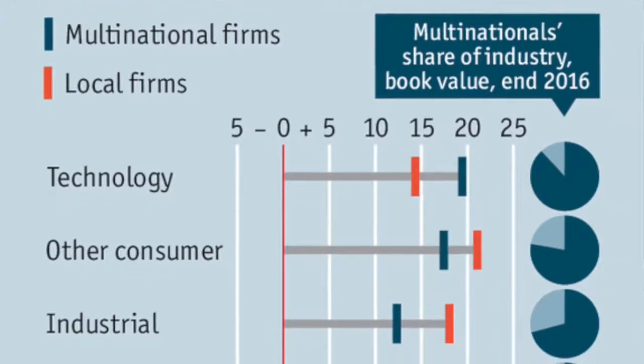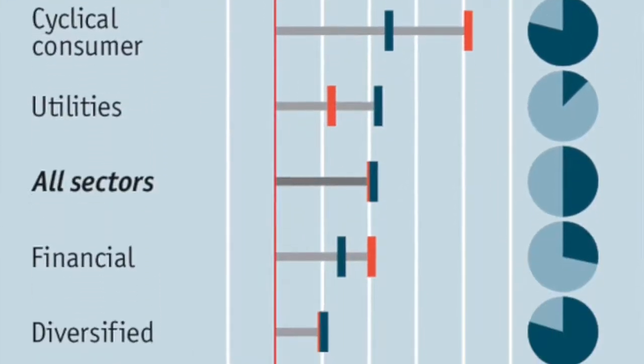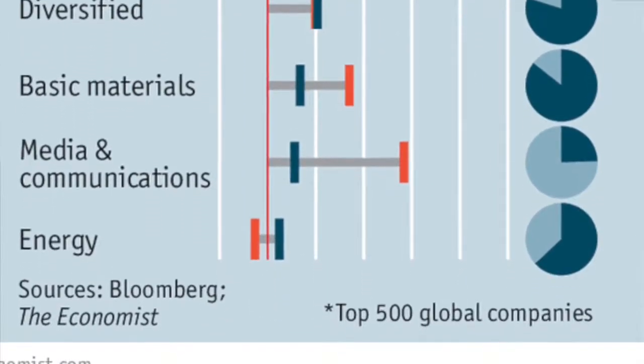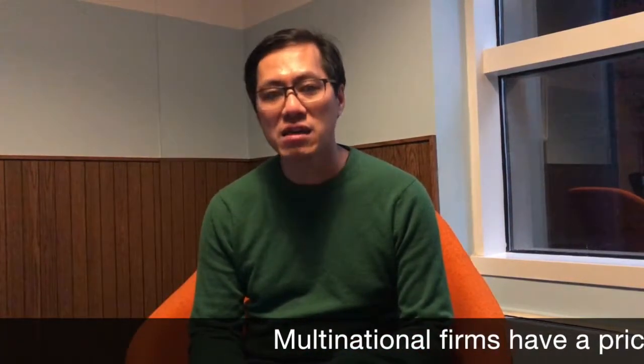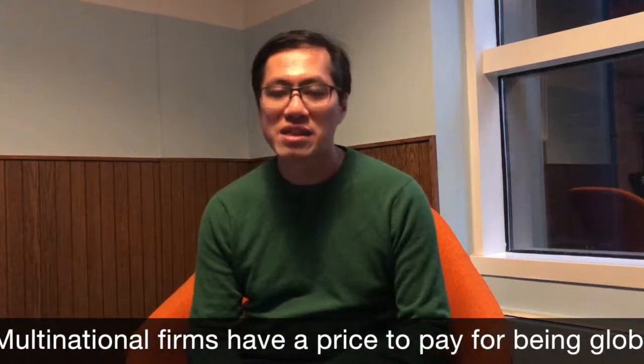Here is the chart from The Economist. The Economist is known for its pithy headlines, and this one is no exception: 'The price of being global.' I see multinational firms and local firms being contrasted by the return on equity, so I am expecting a story that says multinational firms have a price to pay for being global rather than local.